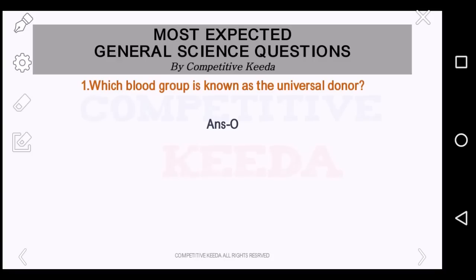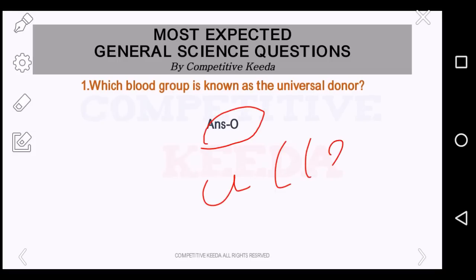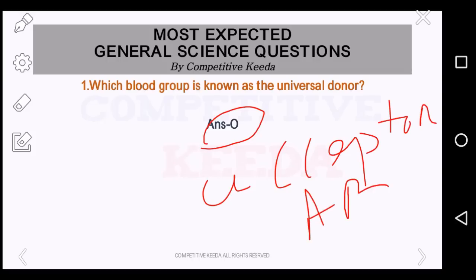Which blood group is known as the universal donor? The answer here is blood group O. Another question can come: which blood group is known as the universal acceptor? The answer will be blood group AB. Sometimes you may get confused between both of these. Remember: the acceptor A — so the answer should be AB; and donor has O — so the answer would be O.